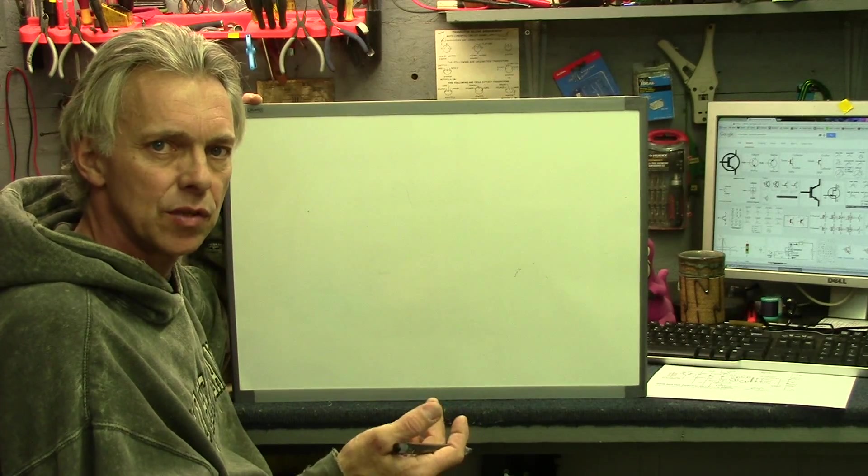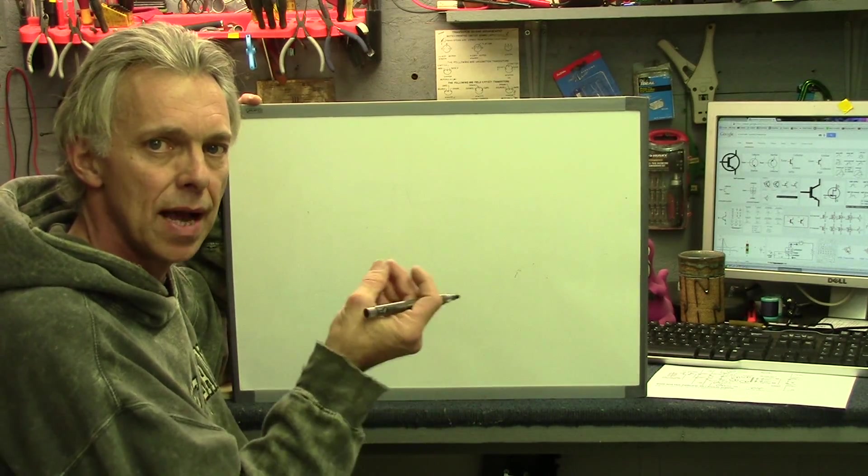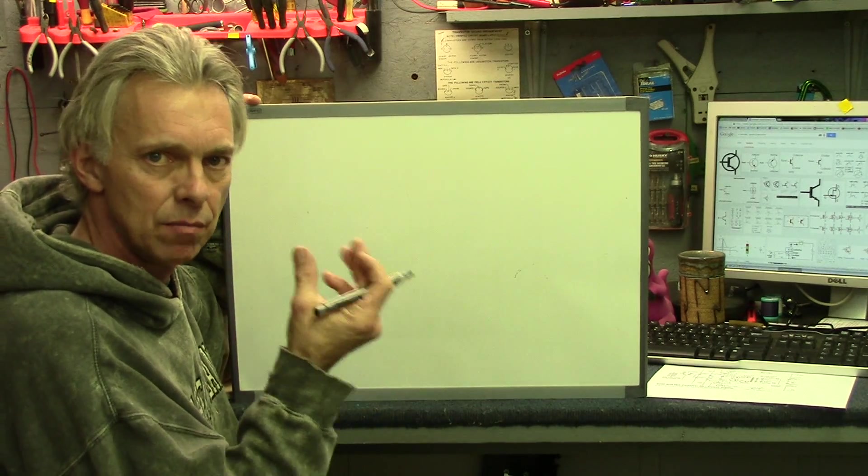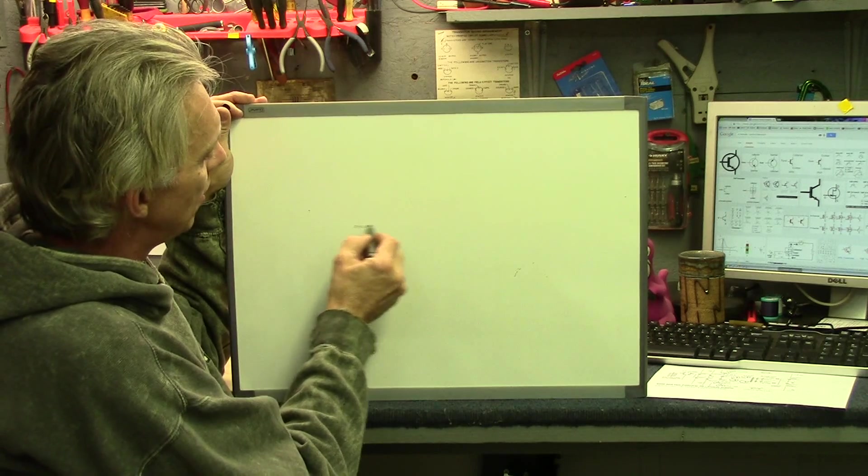Fuses help protect a circuit. They're rated in amps, as in how many amps they will carry before they actually melt and break the contact between each side. There's a symbol for them that looks like this.